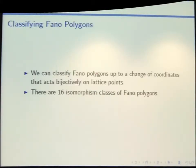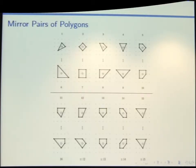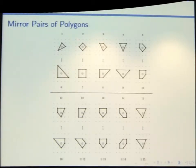You can classify all of the Fano polygons up to an overall change of coordinates that preserves your underlying lattice, and you'll get 16 isomorphism classes. Here's the picture — some of the Fano polygons when you do the polar duality are self-dual, so that's incorporated in the picture. You can play that same game with counting up the boundary lattice points on each side and adding them up, and you would get 12 in every case.